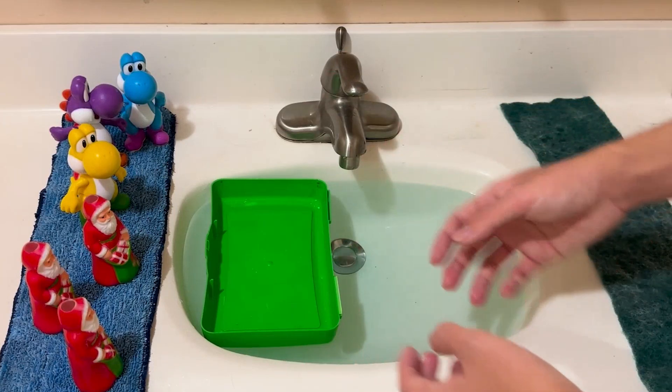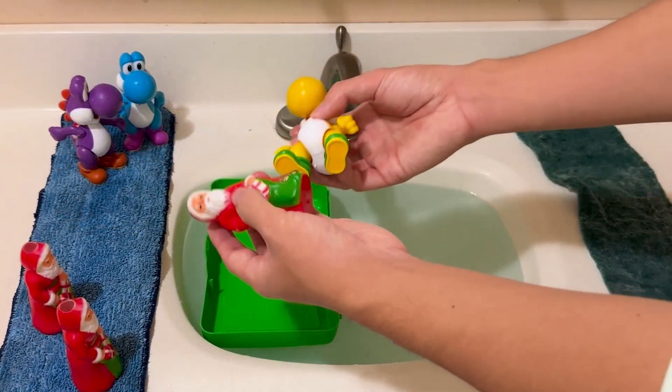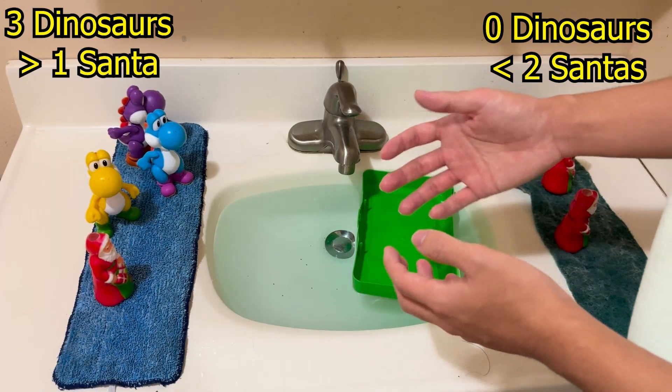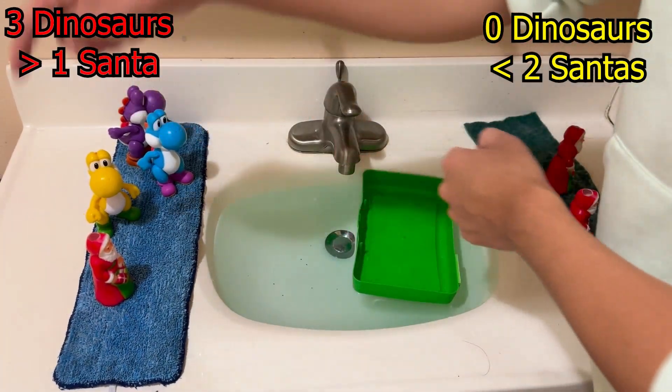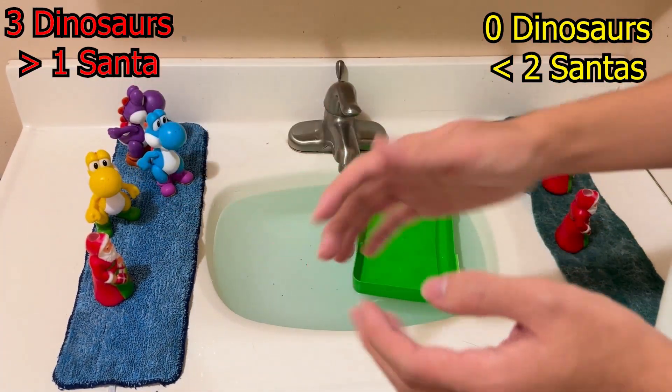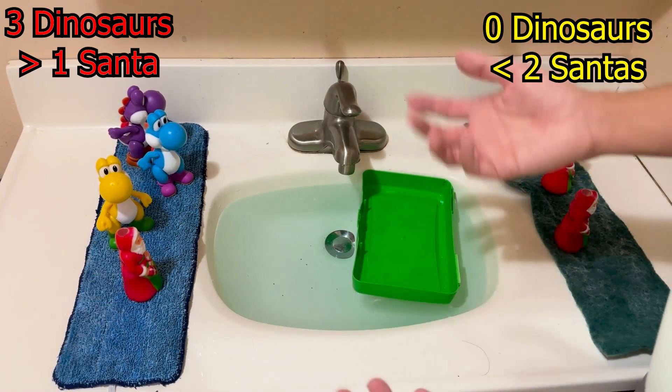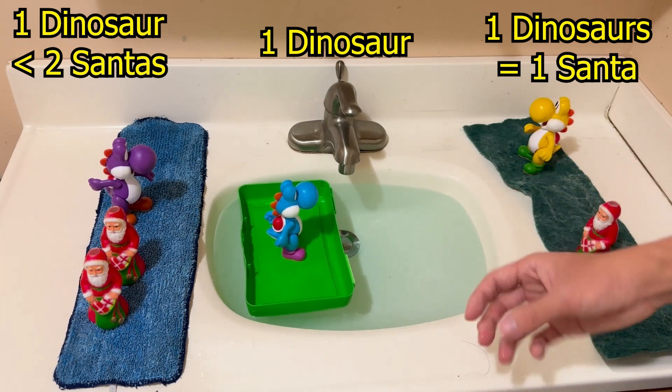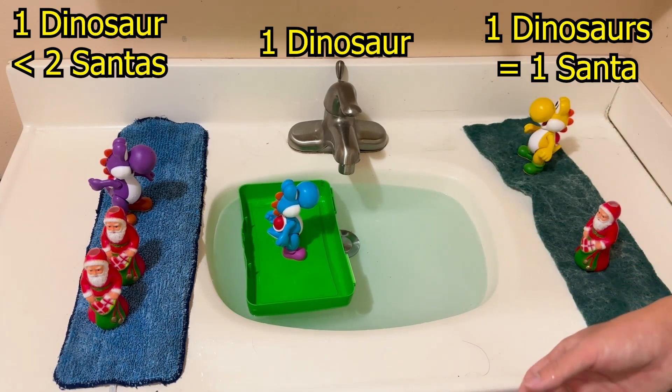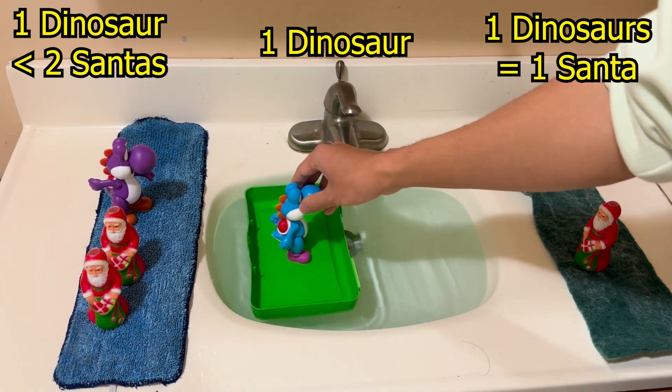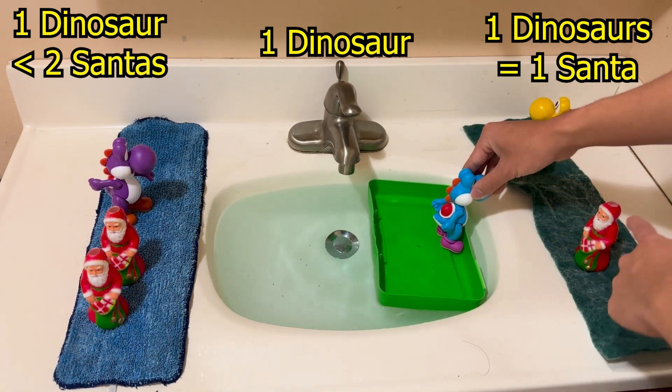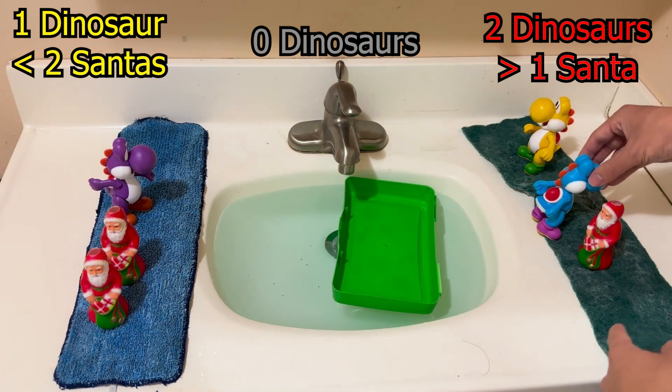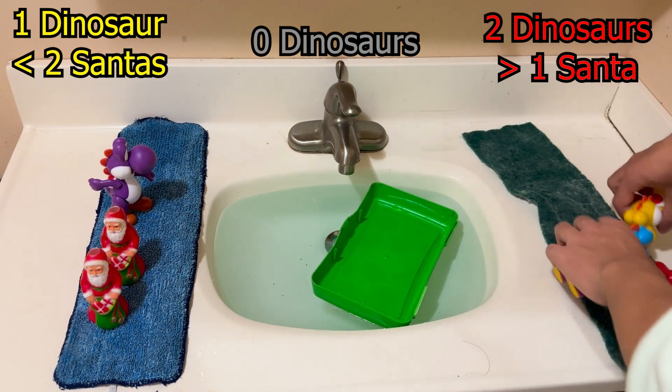But as one final caveat, even though the dinosaurs and the Santas are all friends, the dinosaurs still have this biological urge to eat humans. This means that if the dinosaurs outnumber the Santas on either side of the river at any point in their journey, the dinosaurs can't help but eat the Santa, killing him. This is true even if it only happens for an instant during a raft transfer, such as when this dinosaur comes to the right side, plans on picking up this Santa, but for a brief moment, there's two Yoshis on the right side and one Santa, and the dinosaurs will start devouring into the flesh.